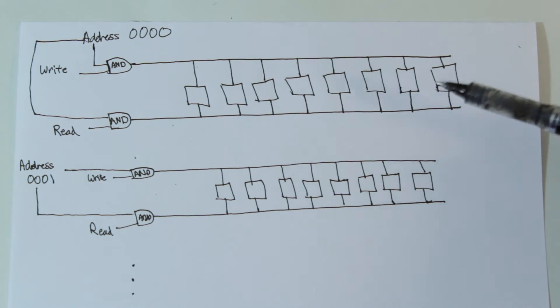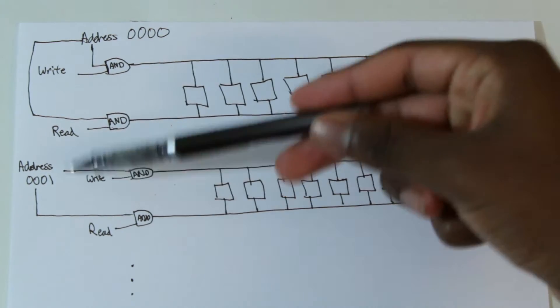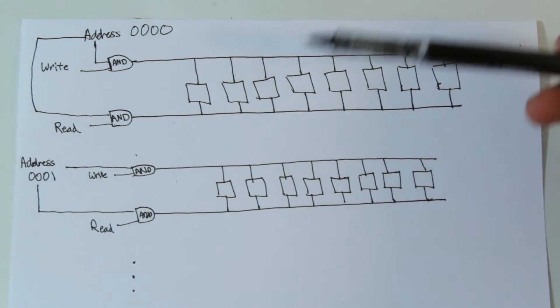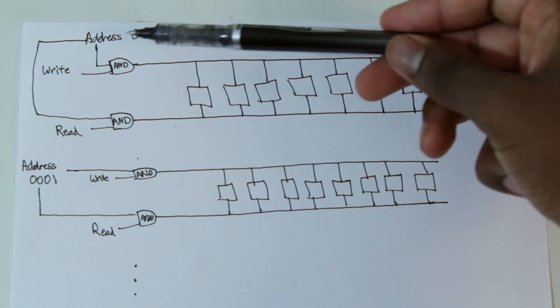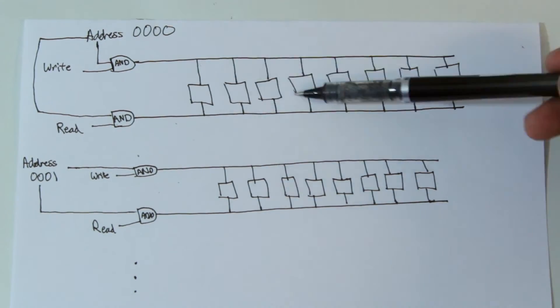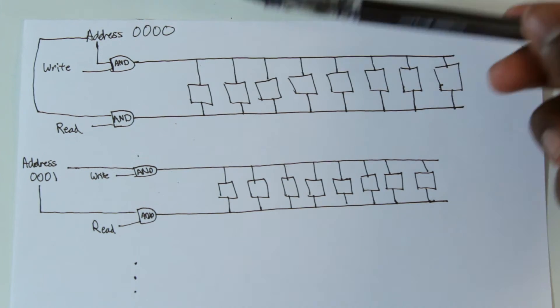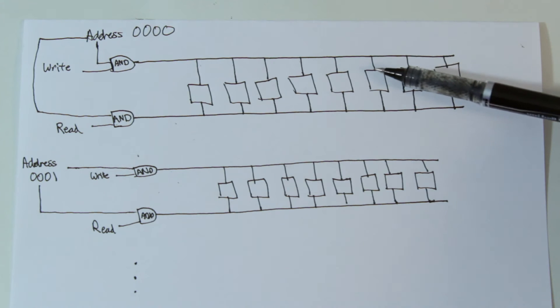Alright, so going back to the beginning, we now have the way to store an address. I mean, not store an address, but to address an address. To talk to each of these bytes individually, right? So now we just need to connect a register with an AND gate to the write and the read to this address. So now that we can actually interact with each of the bytes individually. And luckily, we don't have to do this with all 16 bytes because there is actually a chip that will do this for us. Here it is.